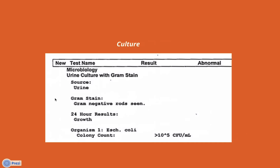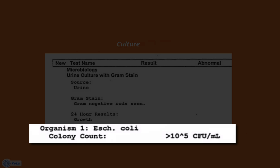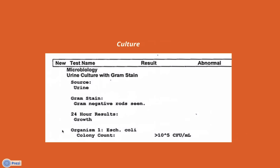If we isolate the culture portion, there are four basic things to look at. We're going to focus on the fourth parameter here, and this is the organism. In this case, it's E. coli, and then the colony count, or the quantity, that has grown in the period of 24 hours in this example. And that's colony-forming units per ml.